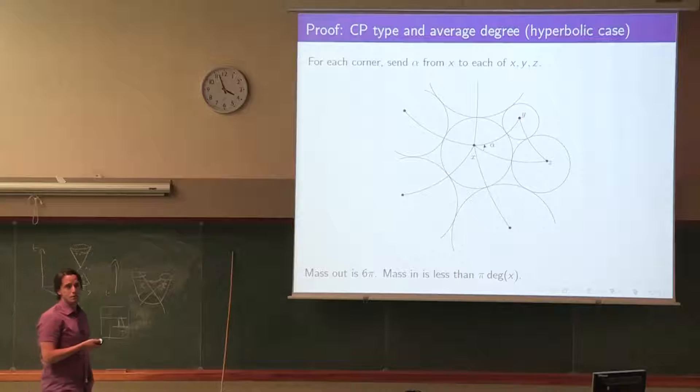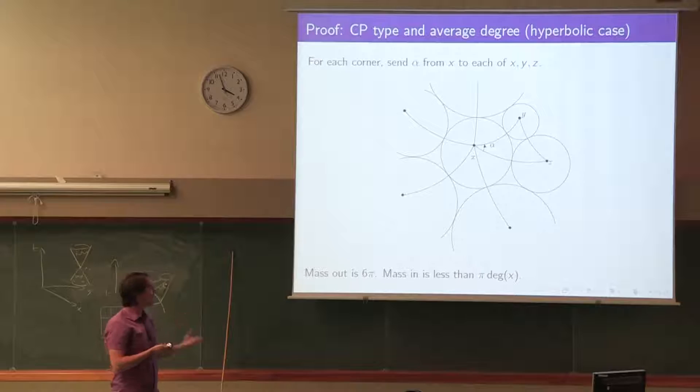The same argument works for the CP hyperbolic case. This time we draw hyperbolic geodesics instead of straight lines — because Schramm's rigidity says the hyperbolic angle is independent of the choice of packing, so it's a valid input for the mass transport. Since the sum of angles in a hyperbolic triangle is always less than pi, the expected degree must be greater than 6.